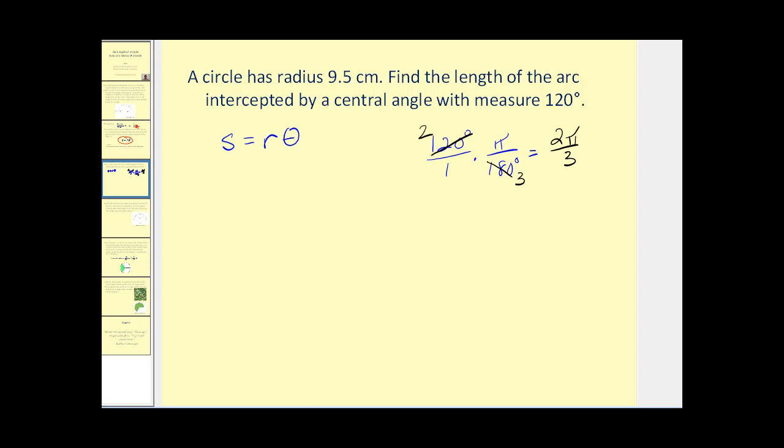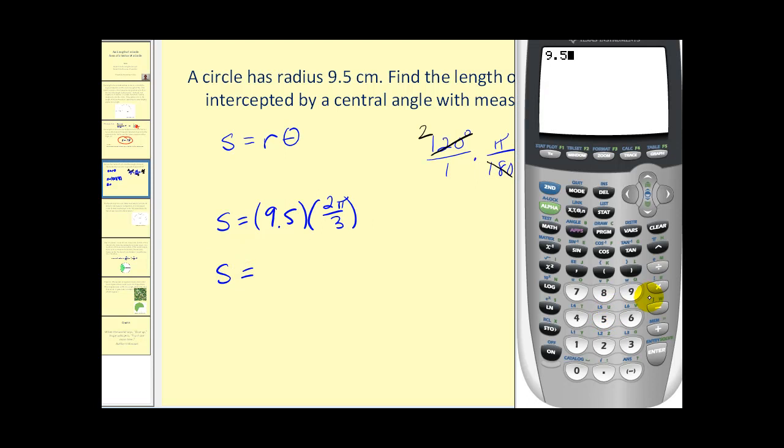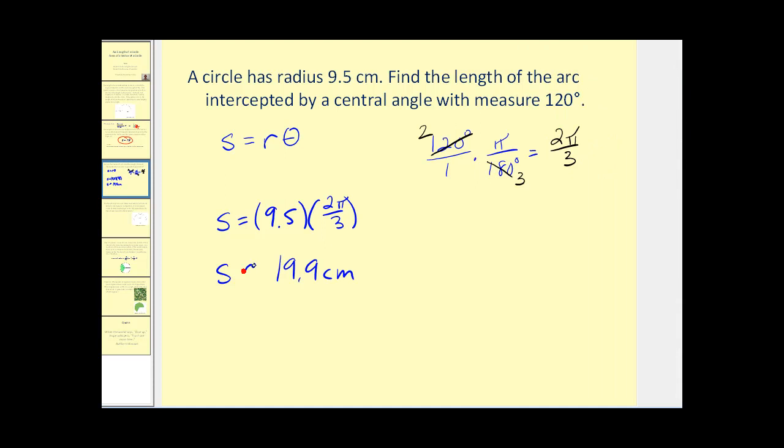Now we can find the arc length. s equals the radius, which is 9.5 centimeters, times the angle in radians, which is 2π divided by 3. So our arc length will be 9.5 times 2π divided by 3. We get our decimal approximation. It doesn't tell us where to round, so let's round to the tenths. We have approximately 19.9 centimeters for that arc length.